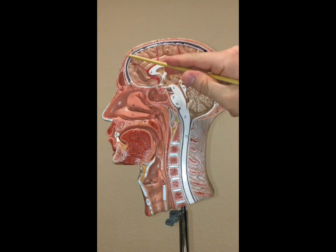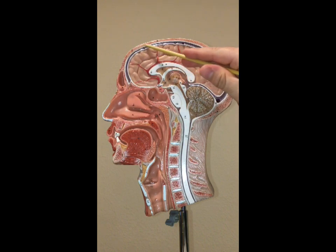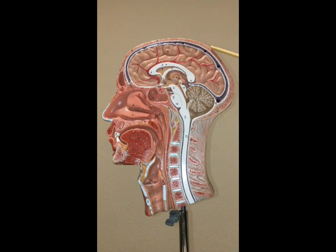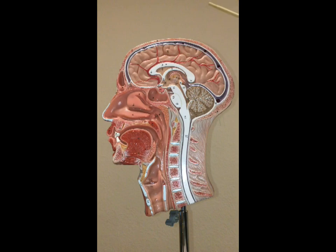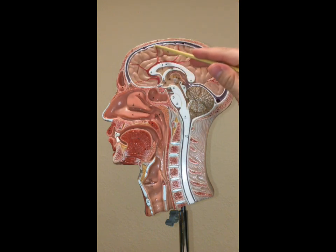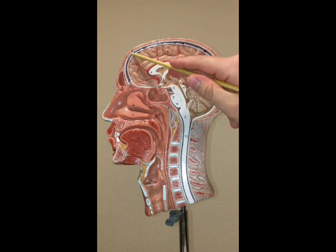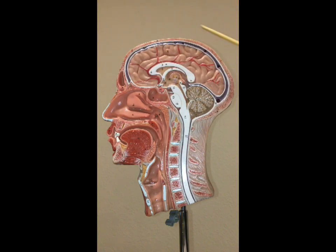Two connective tissue layers make up the dura mater: one being the periosteal layer and the other being the meningeal layer. The dura mater is always two layers, whether or not they're separated. When they are separated and filled with venous blood, that forms a sinus. You don't need to know these individual layers, but just know the dura mater consists of two dense connective tissue layers. All this blue represents venous blood.